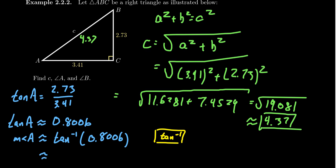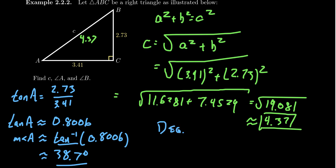Just like with sine, cosine, and tangent, when using arc tangent, inverse sine, or inverse cosine, make sure your calculator is in degree mode, because the output needs to be in degrees, not radians. So angle A ≈ 38.7 degrees.